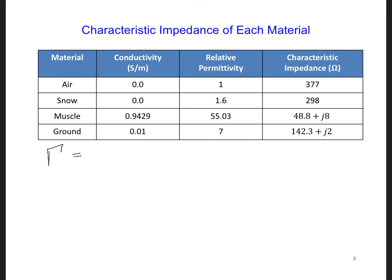Remember the reflection coefficient is eta2 minus eta1 over eta2 plus eta1, where material 2 is the material the wave is reflecting off of and material 1 is the material the wave is incident from or already propagating in.